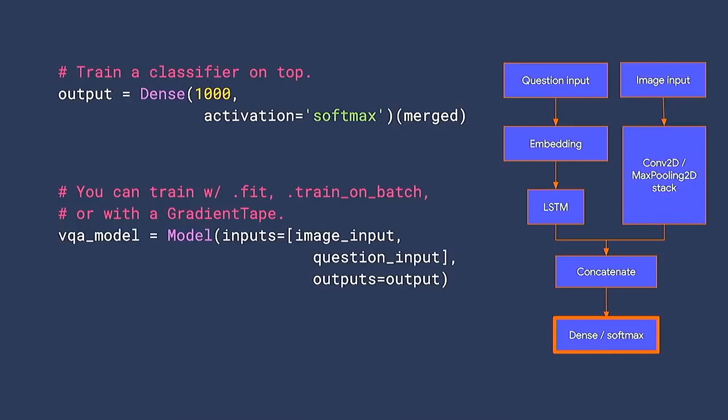This VQA model works exactly like any other Keras model. You can call model.fit, model.train_on_batch, use callbacks, or write a custom training loop using gradient tapes. And just like sequential models, because there's a data structure behind the scenes — a graph — TensorFlow 2 can run compatibility checks to make sure your layers work with each other. If you haven't used the functional API, whether you came from sequential Keras or from PyTorch subclassing, I really encourage you to try it. I've had only positive results.